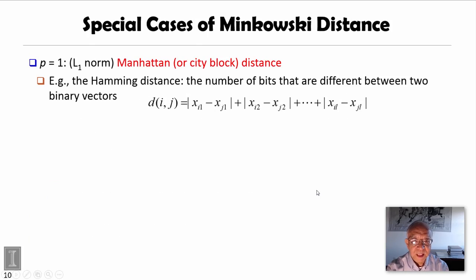We look at some special cases of Minkowski distance. If p equals 1, we call L1 norm, also called Manhattan or city block distance. In particular, if we are dealing with binary vectors, we call this Hamming distance, the number of bits that are different.